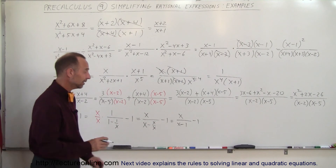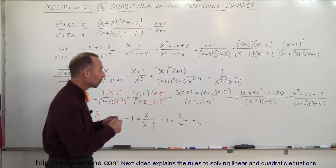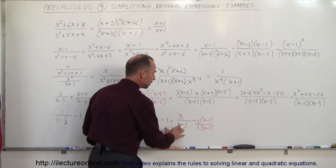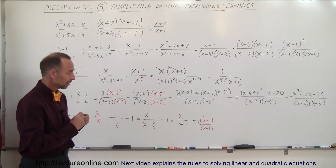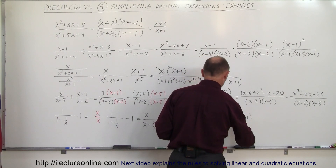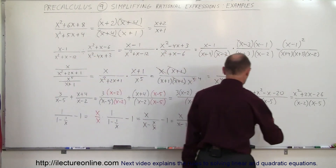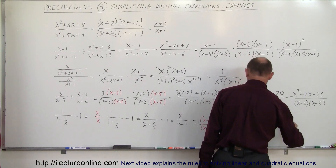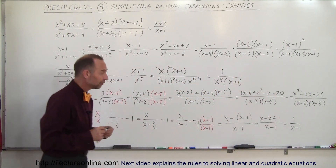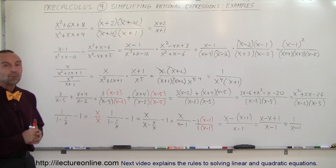Now I have to combine those two. I need the same common denominator — I have x minus 1 here, and the 1 can be written as x minus 1 over x minus 1. Now the denominators are the same, so I can write this as x minus the quantity x minus 1, over the common denominator x minus 1. Removing the parentheses: x minus x plus 1 over x minus 1. The x's cancel out, giving 1 over x minus 1. That would be the final answer. That's how we do it — some nice examples of how to simplify rational expressions.